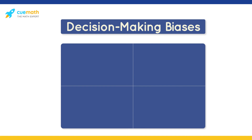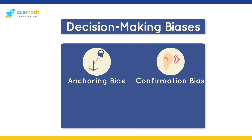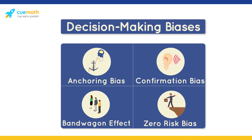For example, an anchoring bias means an over-reliance on the first piece of information. A confirmation bias involves listening to information that confirms your preconceived notions. Another type of bias is the bandwagon effect, where you do things because everyone else is doing it. Then there is the zero-risk bias, which means that you ignore risks to feel safe.